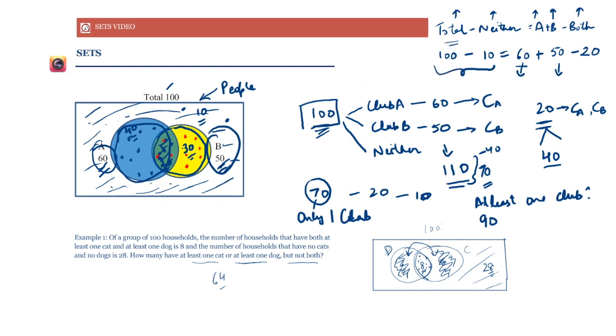The left-hand side — total minus neither — represents the number of people who are part of at least one club. Understanding the Venn diagram makes two overlapping sets problems extremely easy.